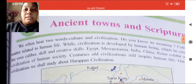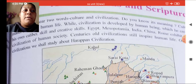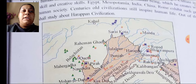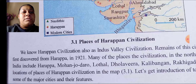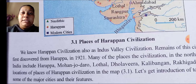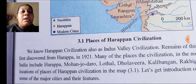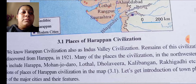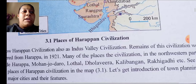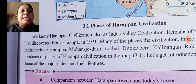Out of these civilizations, we shall study about Harappan civilization. We know Harappan civilization also as Indus Valley civilization — you can underline this. Remains of this civilization were first discovered from Harappa in 1921 — you have to underline this also and remember this year.